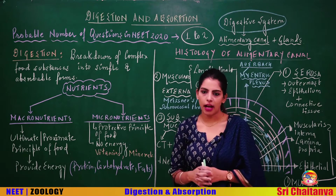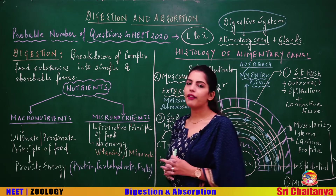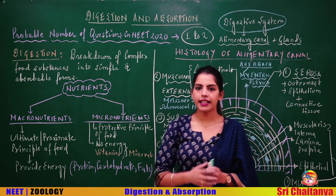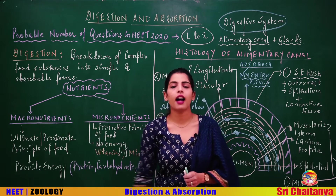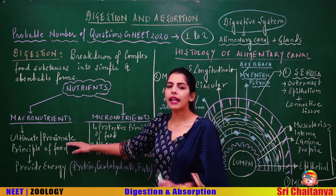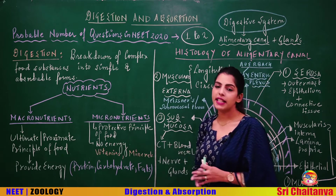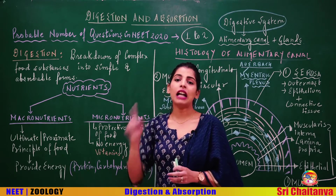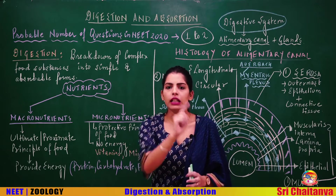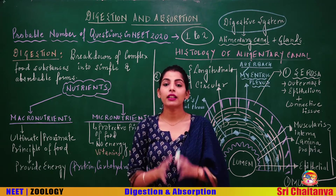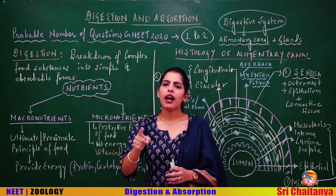Another basic concept in this chapter is nutrients. Nutrients are of two types: macronutrients and micronutrients. Macronutrients are large-sized; micronutrients are small-sized. Macronutrients are considered under the proximate or ultimate principle of food, meaning all components of food that provide you with direct energy — protein, carbohydrates, and fats.